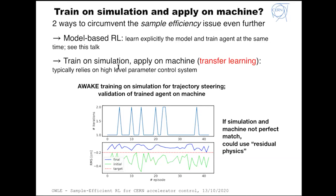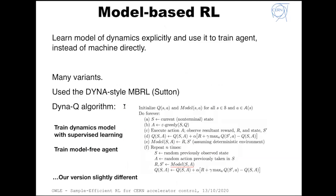We tried simulation-based training: we have a gym environment that goes into simulation instead of the machine. We trained the NAF agent on simulation and then did a validation run on the machine. The result is similar: about 40 episodes, with all different initial trajectories corrected above the threshold, each in one or two iterations.